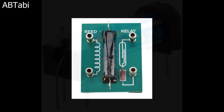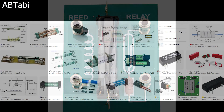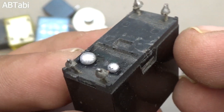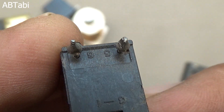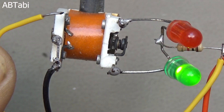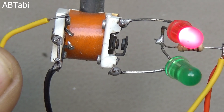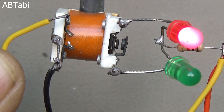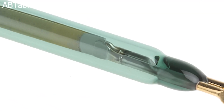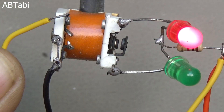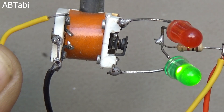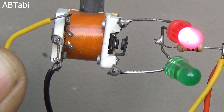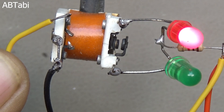Reed relay: reed relays also operate on an electromechanical basis at their core, but use a modified design to reduce or eliminate common EMR problems. They are made up of two magnetic metal blades suspended inside a tube of inert gas with a coil. When the coil energizes, the two blades are attracted to one another, completing the circuit. This prevents some of the wear and tear that shortens the lifespan of typical EMR relays, though they are slower and cannot handle as high a current as SSR switches.